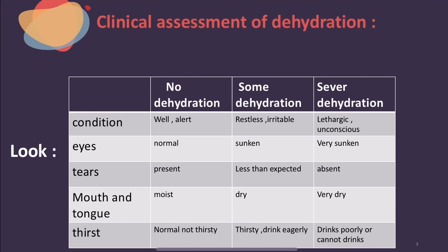Now assess thirst — offer the child fluid, for example by spoon. If the child drinks normally without particular interest or refuses to drink, this means no dehydration. If the child grasps the cup or spoon and drinks eagerly, this means some dehydration. In severe dehydration, the baby drinks poorly or cannot drink at all.